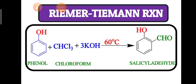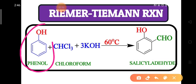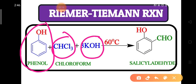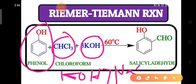The general equation for the Reimer-Tiemann reaction shows phenol reacting with chloroform in the presence of base. Here KOH is written, but instead of KOH we can use sodium hydroxide also. However, potassium hydroxide is a stronger base compared to sodium hydroxide.